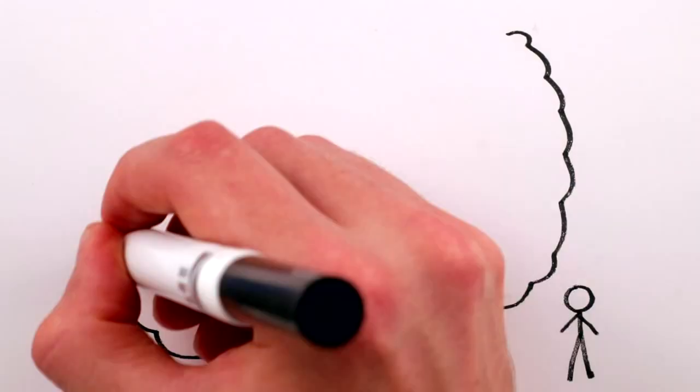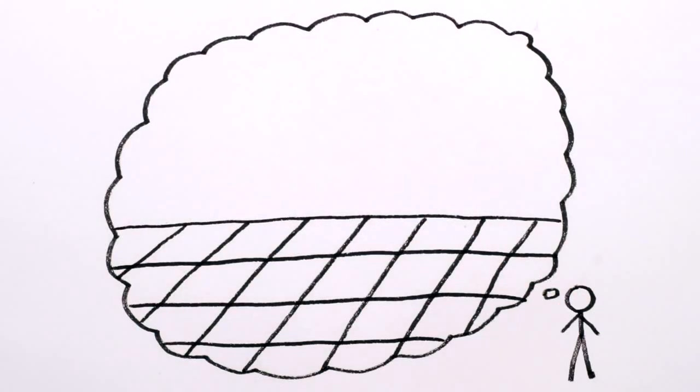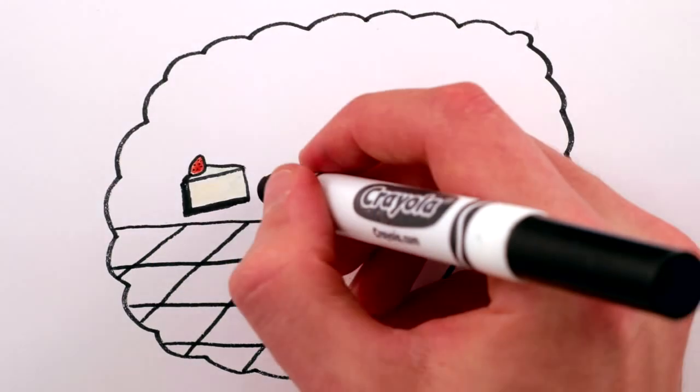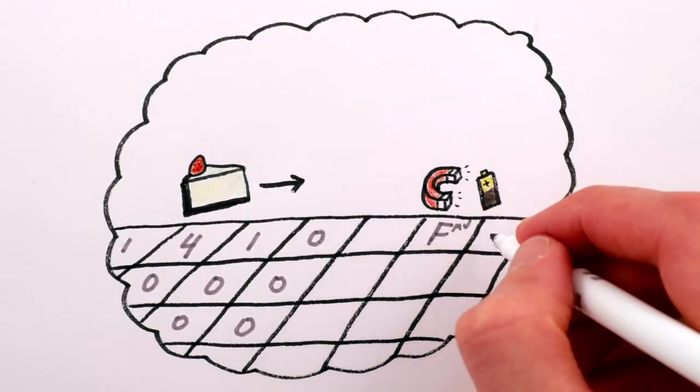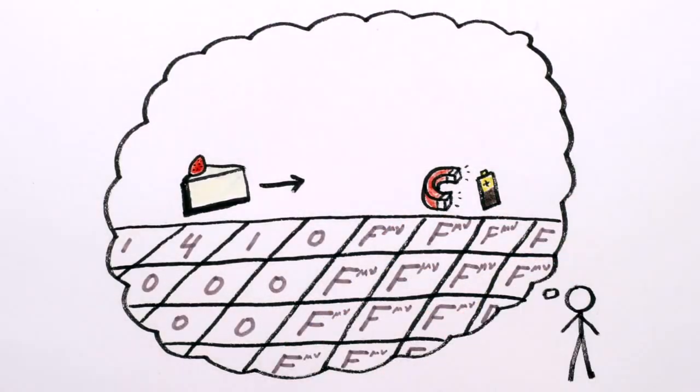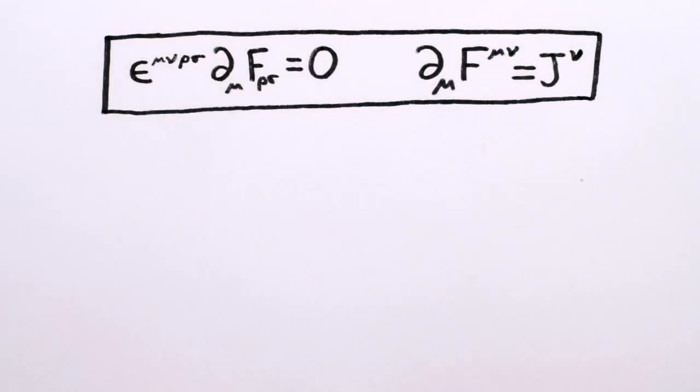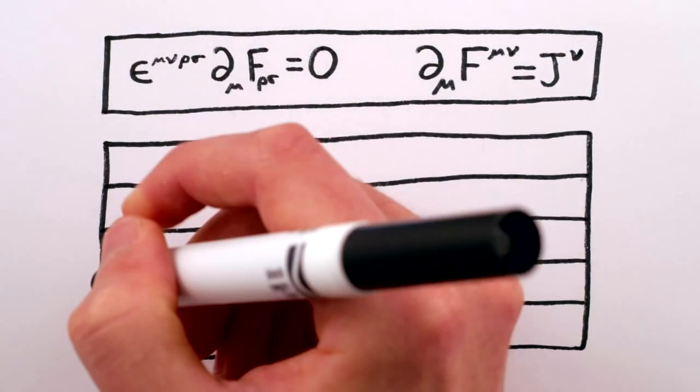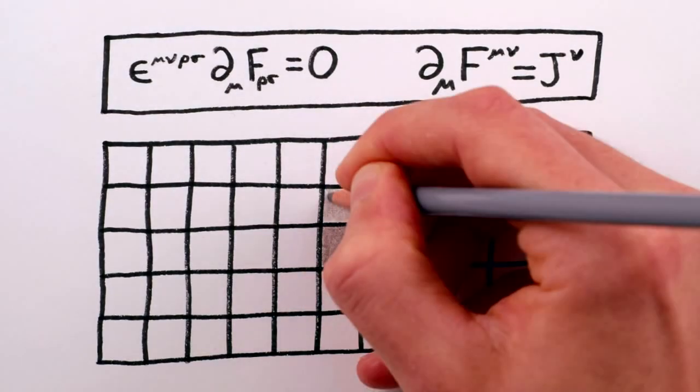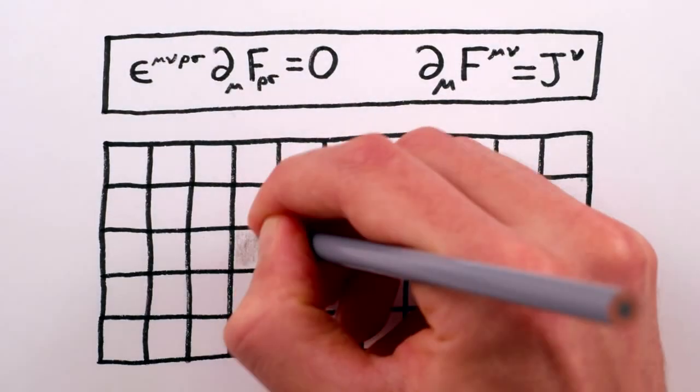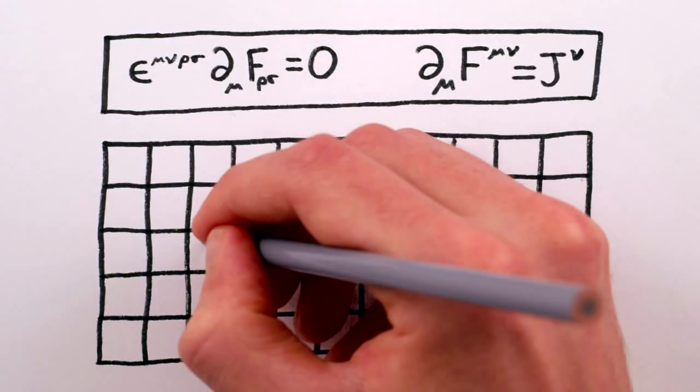So young JC realized that at every point in space, in addition to a number telling you the flow of strawberry cheesecake there, there are also numbers telling you the strength and direction of the electromagnetic field. The mathematical equations he used to describe these numbers also relate how the strength of the field at one point in space affects the strengths at nearby points, and those at their nearby points, and so on.